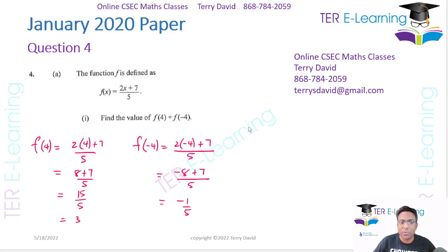So if you want to work out f of 4 plus f of minus 4, then we're going to say 3 plus minus 1 fifth, and that should give me 2 and 4 fifths, or 14 over 5. So that is part 1.